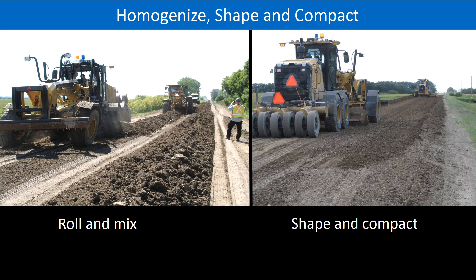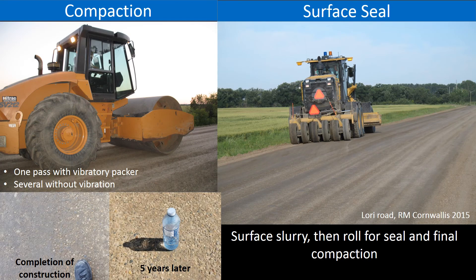Following homogenization, the road is ready for shaping and the compaction process begins. The main compaction is carried out with a large steel drum roller. The first pass is with vibration on, which is generally sufficient to create a hard, compacted surface. Additional passes may be carried out with vibration off, so long as it is apparent that the road surface is benefiting from the process. The final step is the surface seal, accomplished by slurrying the surface with water, allowing it to soak in, and then compacting with rubber tires. This process may be repeated until the desired surface seal is achieved.